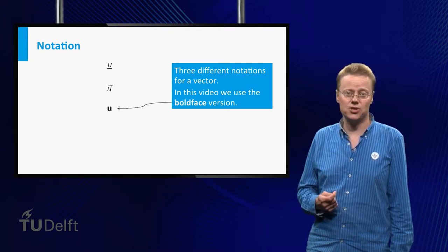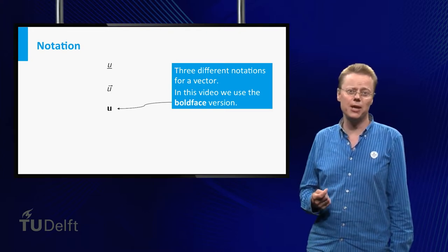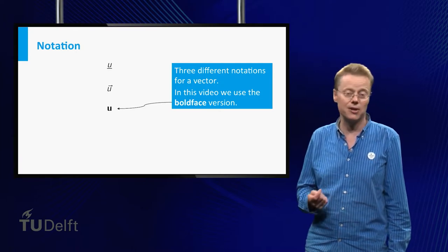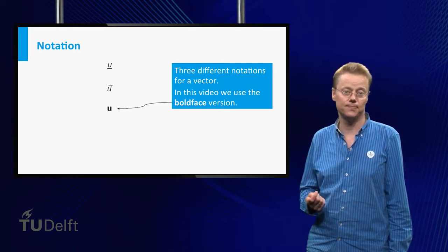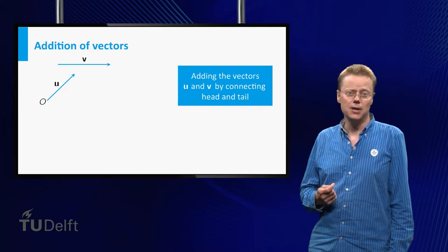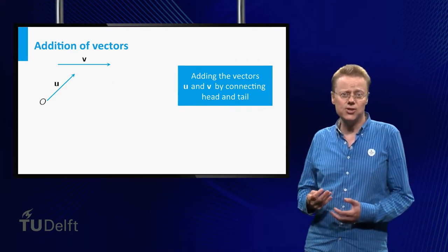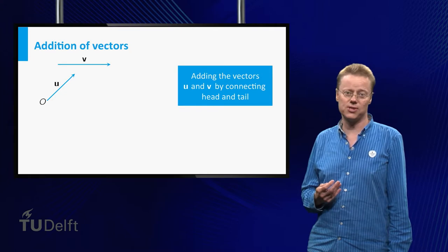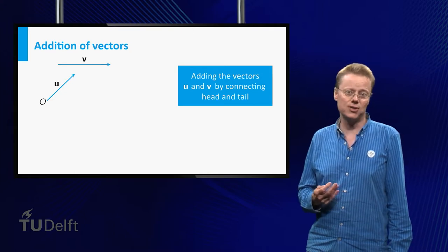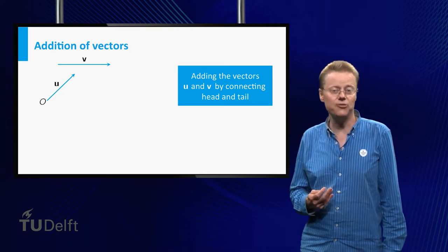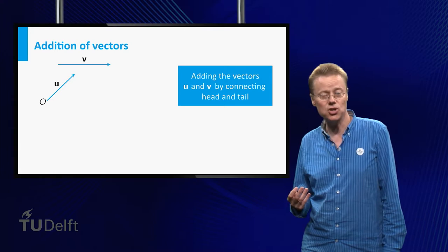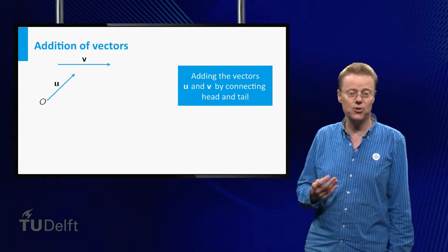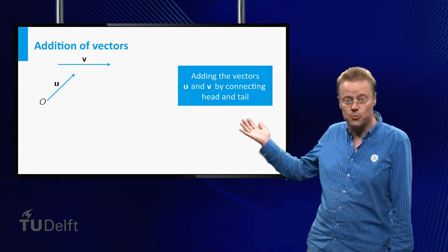Remember that this is just a convention, so don't panic when you see people using other ways to indicate the difference between a scalar and a vector. Since two vectors are considered equal whenever their length and direction coincide, adding two vectors can be done by shifting the second vector such that its tail starts at the head of the first vector.